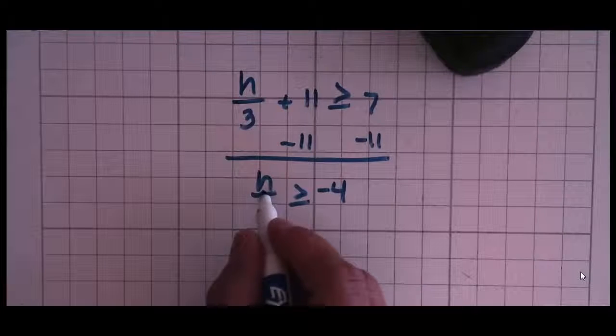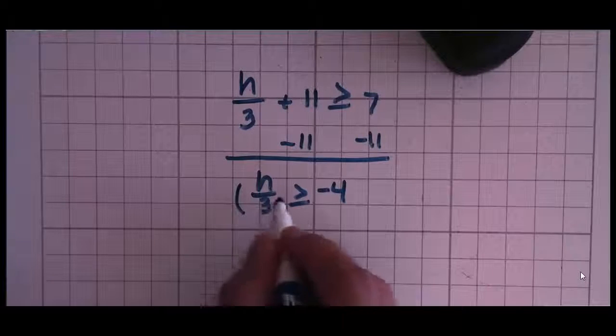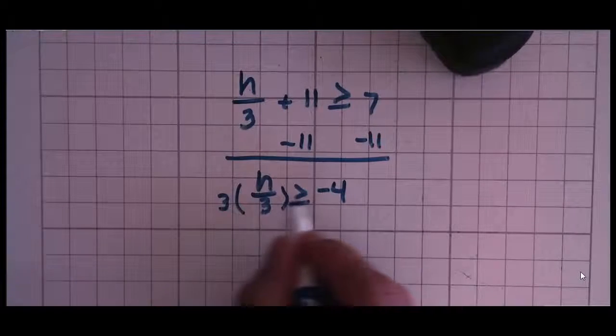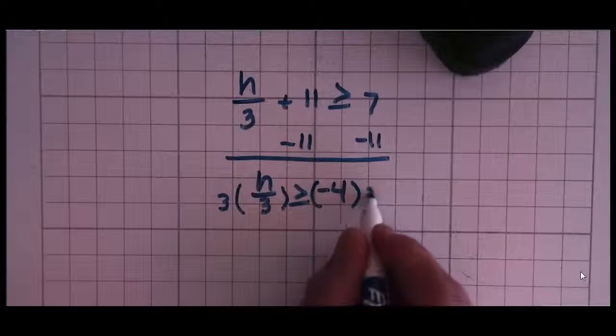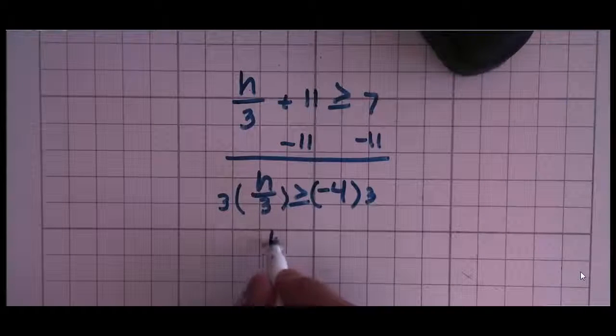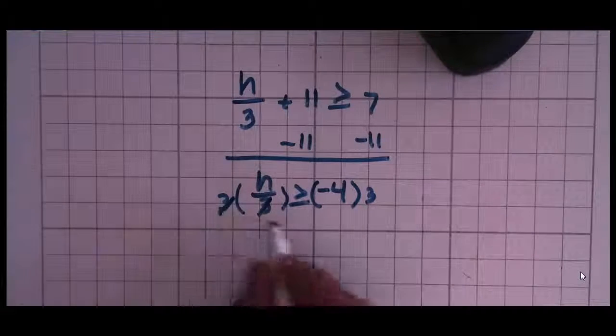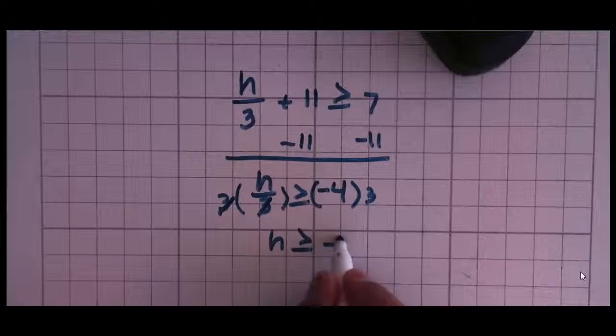It's going to be negative 4. Now this is the same as h divided by 3. Opposite of division is multiplication. I'm going to multiply both sides by 3.